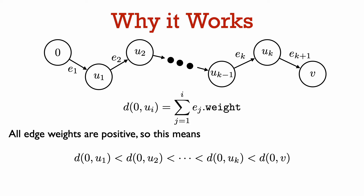Remember that in the case of Dijkstra's algorithm, we assume that all the edge weights are positive. So this formula tells us that the vertices on this path from 0 to V are ordered in terms of their distance from vertex 0. Vertex u_2 is further away from vertex 0 than u_1 is, and vertex u_3 is further away from vertex 0 than u_2 is. Note that this is not necessarily true if the graph can have negative weights.